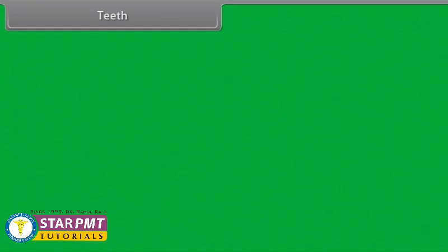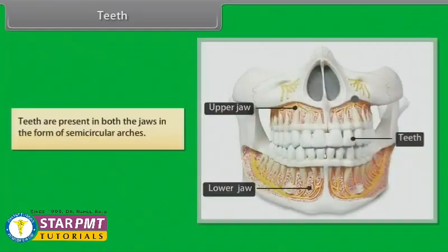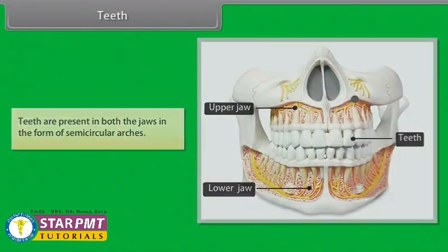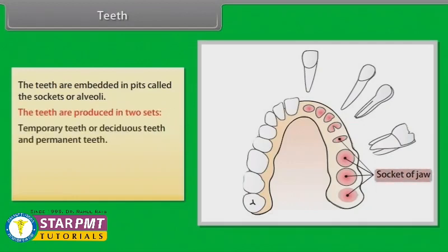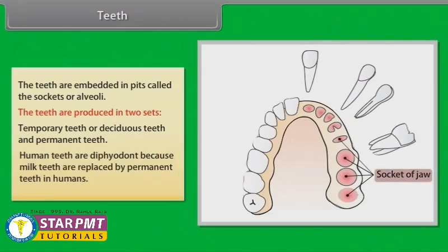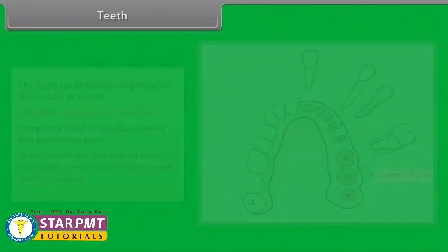Teeth are present in both jaws in the form of semi-circular arches, embedded in pits called sockets or alveoli. Teeth are produced in two sets: temporary or deciduous teeth and permanent teeth. Humans are diphyodont because milk teeth are replaced by permanent teeth. Teeth are of four types.